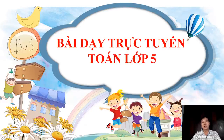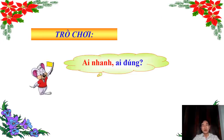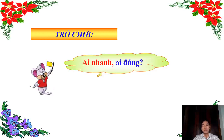Trước khi vào bài học mới, thầy có một trò chơi rất thú vị dành cho các em. Trò chơi có tên là "Ai Nhanh, Ai Đúng". Luật chơi: thầy sẽ có tất cả 3 câu hỏi, mỗi câu có 4 đáp án A, B, C và D. Trong vòng 10 giây, các bạn tìm ra đáp án đúng nhất. Sau 3 lượt chơi, bạn trả lời đúng tất cả sẽ là người chiến thắng.